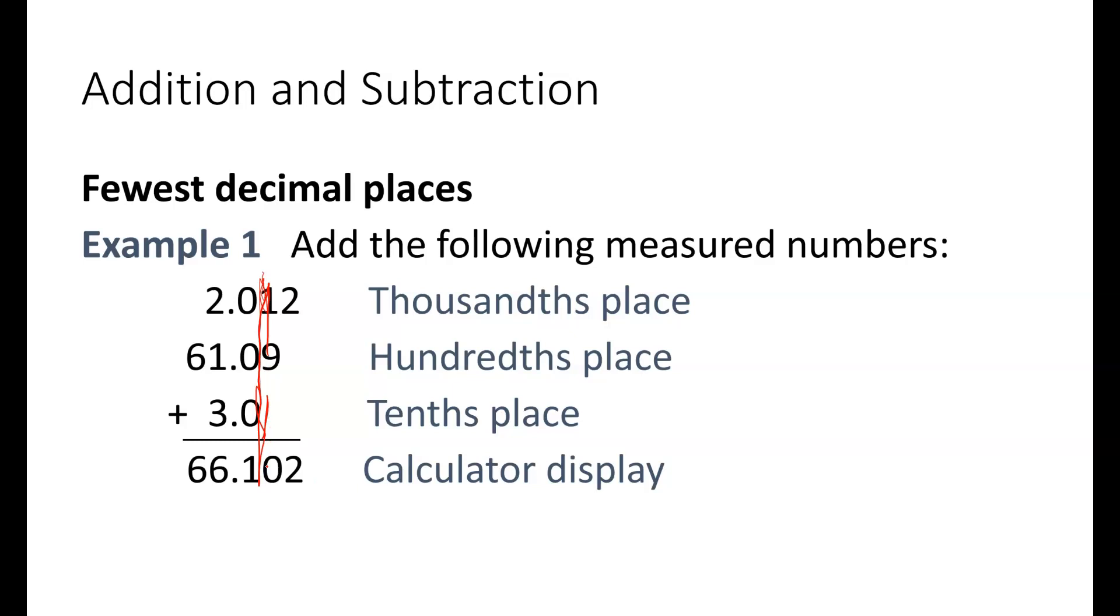When I draw on this line, you can see very easily that we want to round to 0.1. So that 1 is our last significant figure. The 0 that comes after it is below 5, so that means we're going to round it to 66.1.